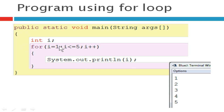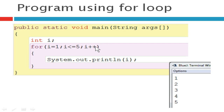It starts with the initial value, goes into the condition statement. The condition is true because 1 is less than or equal to 5, so it enters inside and prints the i value — that is 1 — which you can see on the output screen. Then it goes to the increment statement, so i becomes 2. It checks again: 2 is less than or equal to 5, yes, so it enters inside the loop and prints 2. It goes on like this.